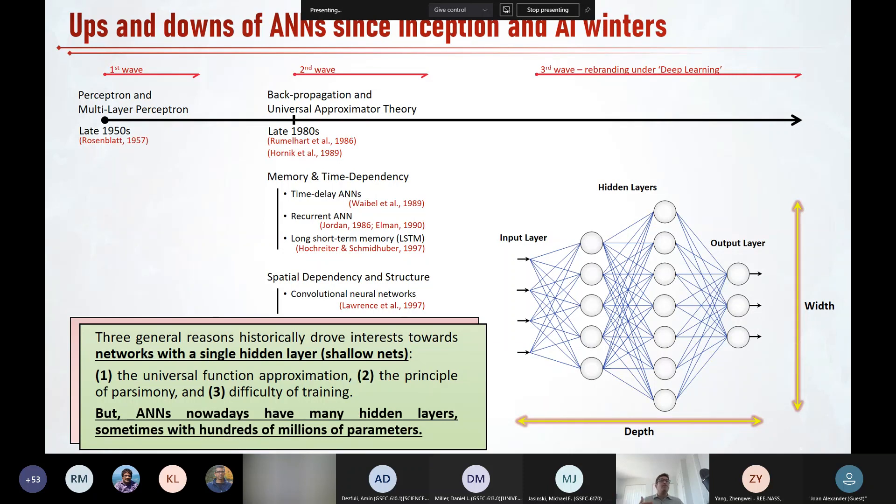So to address these questions, we would first need to discuss what historically drove interest towards networks with only a single hidden layer, a shallow network that are sometimes now called shallow neural networks. While of course, example applications of deeper networks have been around for three decades. I can think of three reasons for that. The universal function approximation theorem that I just described, as it provided a compelling argument that shallow neural networks are fully capable of learning any function. Second is the principle of parsimony as networks with fewer hidden layers are generally deemed less complex and more understandable. And the third one is the difficulty of training as networks with more hidden layers are more complex to train.